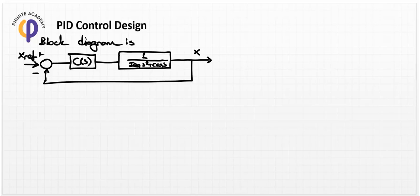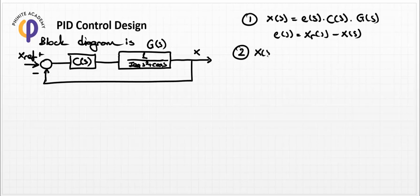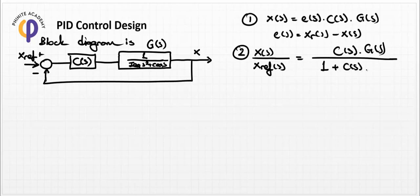First, we should derive the general equation of motion, or the general transfer function for the closed-loop system. X(s) is equal to E(s) * C(s) * G(s), and E(s) is equal to X_ref minus X(s). Collecting these equations, we obtain the general closed-loop form: X(s)/X_ref(s) = C(s)*G(s) divided by (1 + C(s)*G(s)).